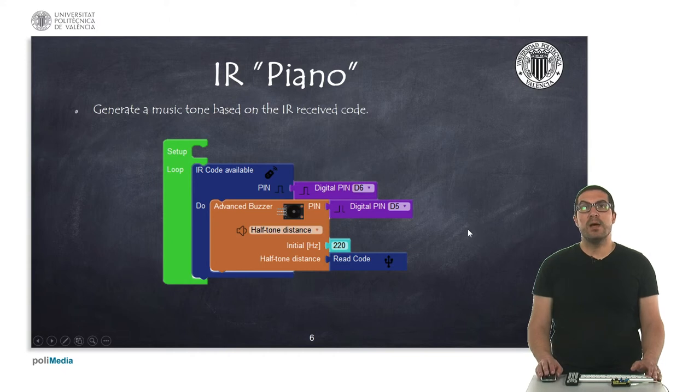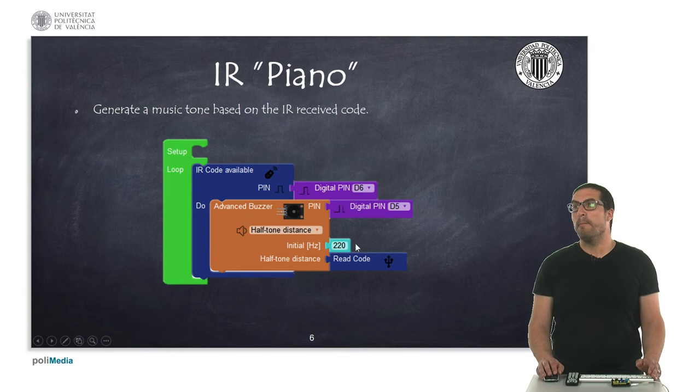In this second example, what I'm doing is, whenever we press the buttons for changing the channel on the infrared remote controller, we will receive the numbers 0, 1, 2 and 3 and so on. I'm using this as a distance to reproduce a tone based on this initial frequency. This is the base frequency and depending on the code I receive, I will reproduce a different sound.